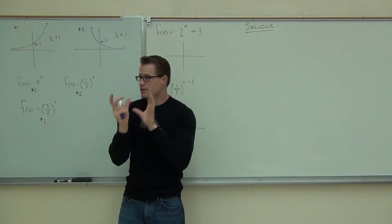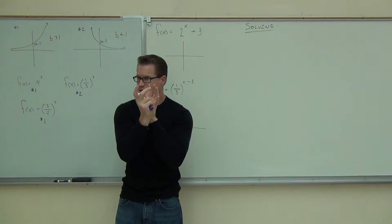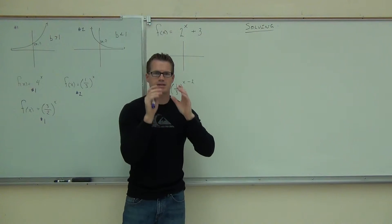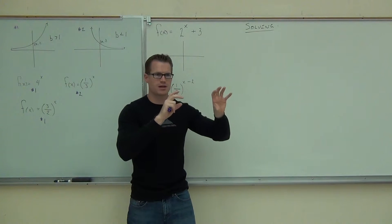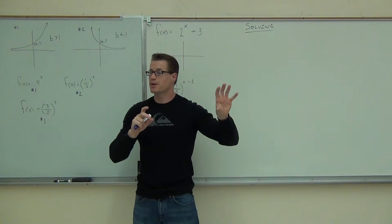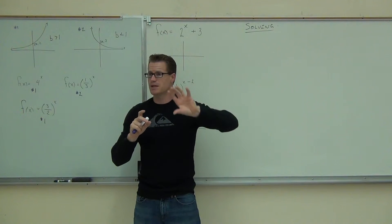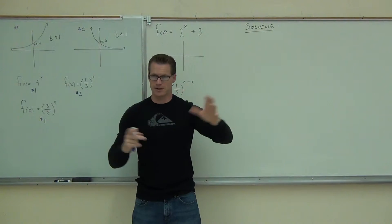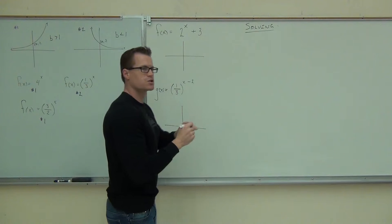Now, that plus 3 at the end of your graph, that plus 3 at the end of your function there, that should equate to some sort of shift. Do you notice how it's not within the function, it's not connected to that x. It's not in the exponent, it's 2 to the x and then at the very end you have that plus 3. You guys see what I'm talking about? That plus 3. Do you suppose that shifts it up, down, left, or right? What do you think?